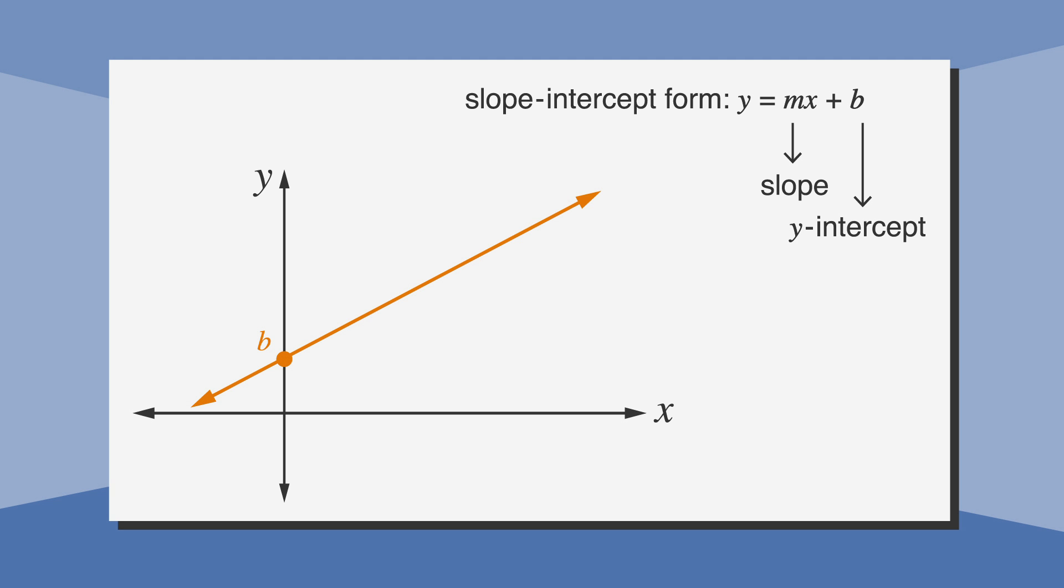The y-intercept is the point on the graph where the line intersects the y-axis. The y-intercept is a point, but b is expressed as just one number. This is because the y-intercept will always be on the y-axis, so it's always at 0, b.